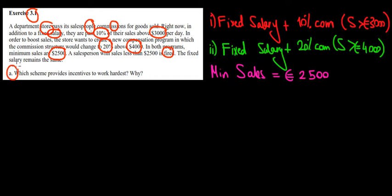What do we have in Part A? Which scheme provides incentives to work the hardest? We have the data here and we're going to solve this using some examples because it's not a mathematical question, it's more intuitive.